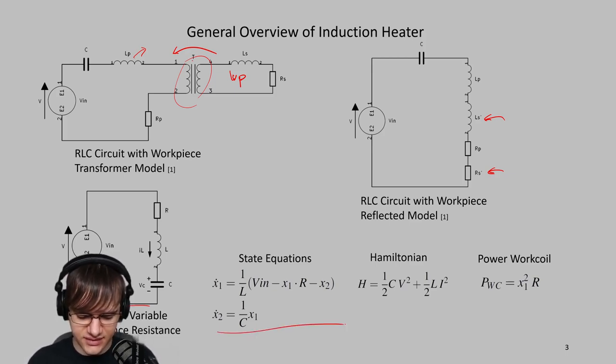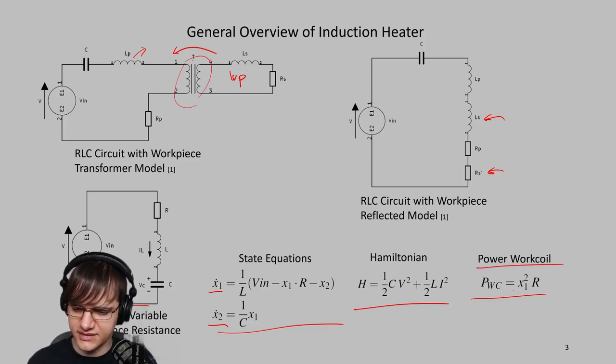For the state equations, we've seen them before in class. X1 is the current through the inductor, and X2 is the voltage across the capacitor. Hamiltonian, and the power through the work coil is just I²R.